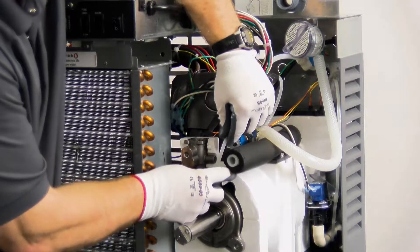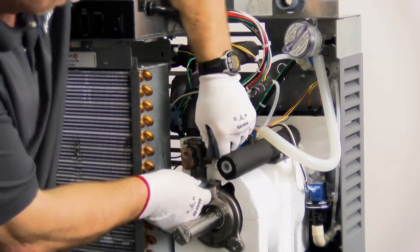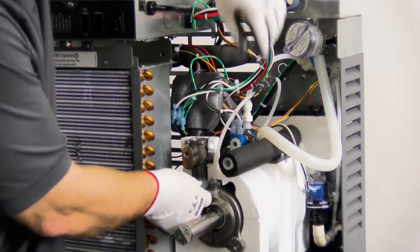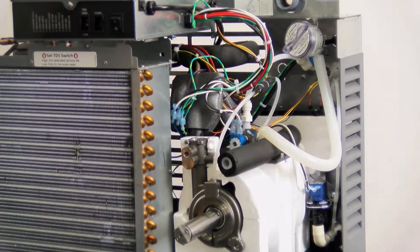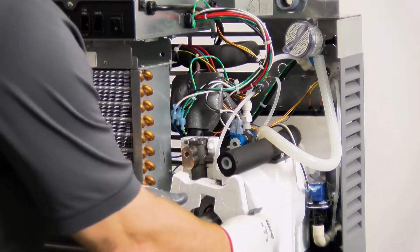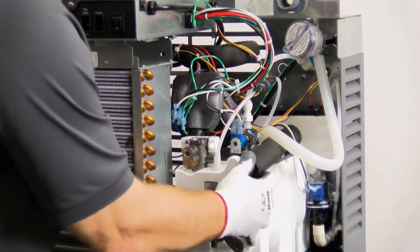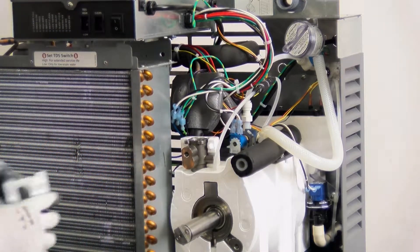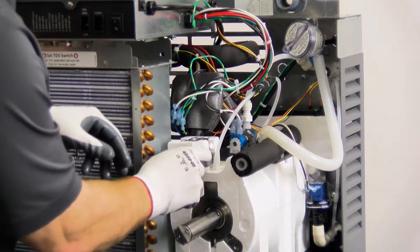Install the water input line into the John Guest fitting at the front of the evaporator. Attach the front evaporator insulation. Install the front shuttle insulation.